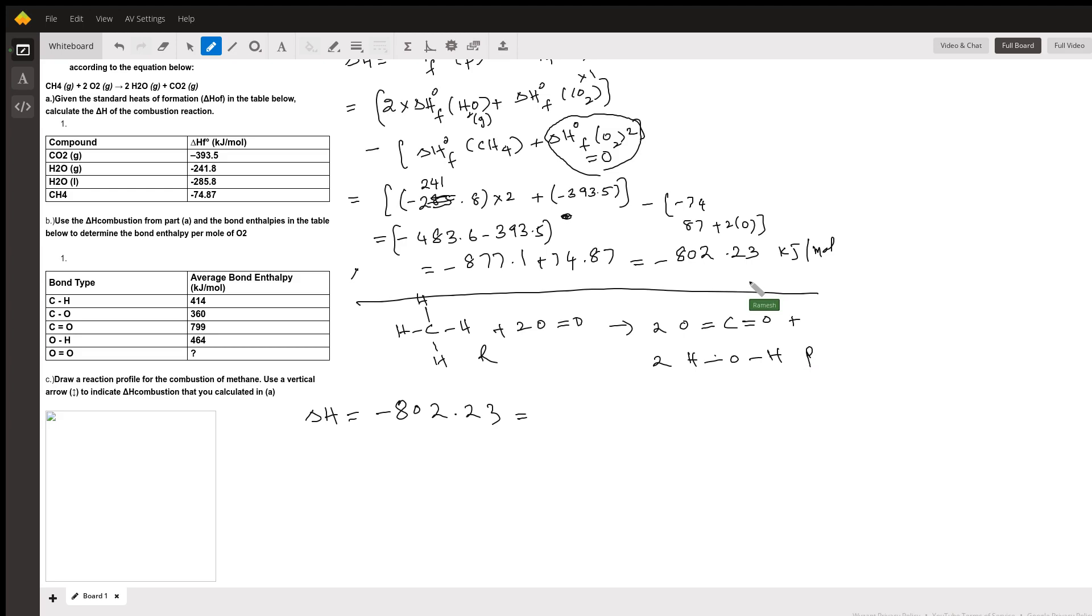So for the bond breaking, you require the energy. There are four carbon hydrogen bonds. So that means minus 802.23 equals to four times the bond enthalpy value of carbon hydrogen, which is 414. Plus, there are two oxygen oxygen values. That is what you need to find out. For reactants, bonds are broken, energy required. So therefore, the value will be with a positive sign. For products, the bonds are formed, energy released. So the values would be with a negative sign.